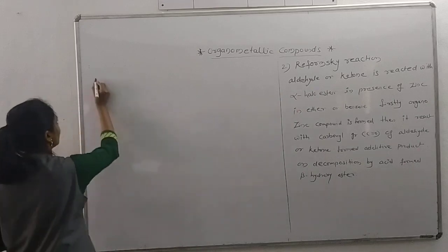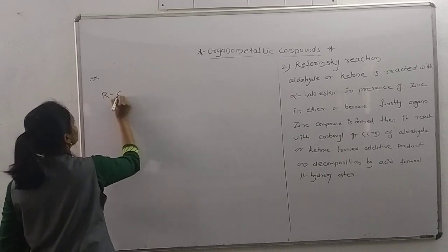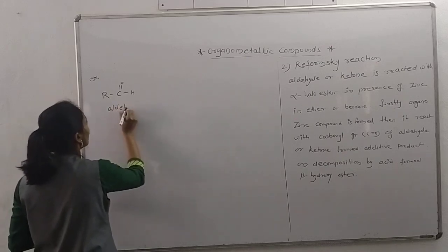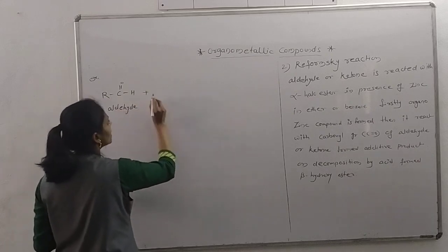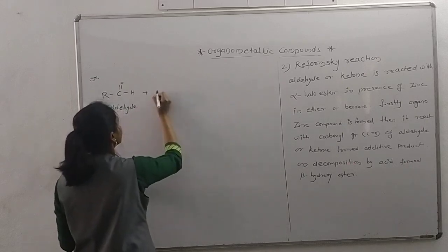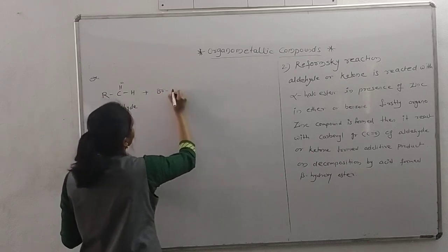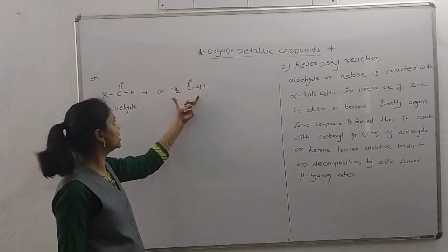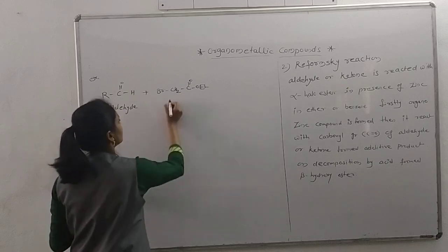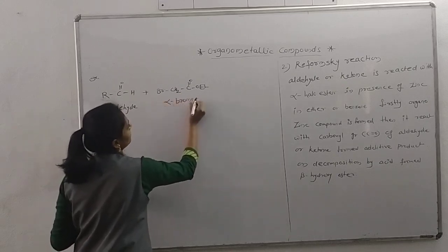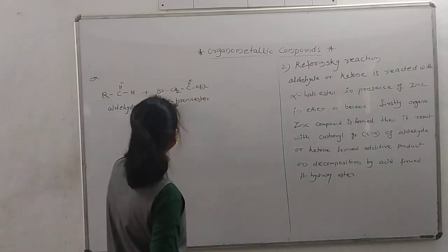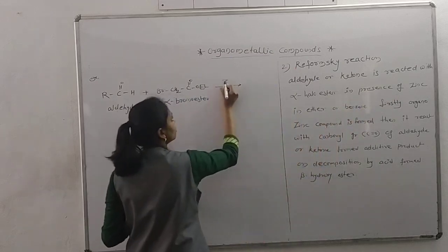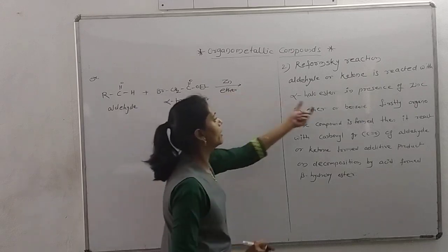Any alpha-halo ester you can write; I am writing here a general example. First, aldehyde: R–C(=O)–H. You can write a specific reaction also. It reacts with the alpha-halo ester — you know the ester structure is C–C(=O)–OEt, but one hydrogen is replaced by halogen, so it is an alpha-halo ester. I am writing here alpha-bromo ester. This reaction is carried out in the presence of zinc in ether or benzene, which you write on the reaction arrow.